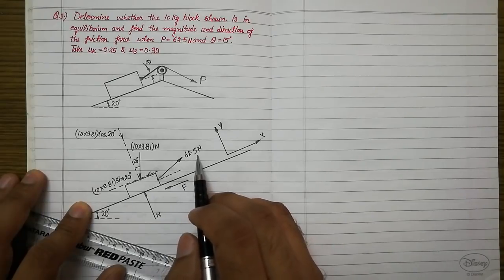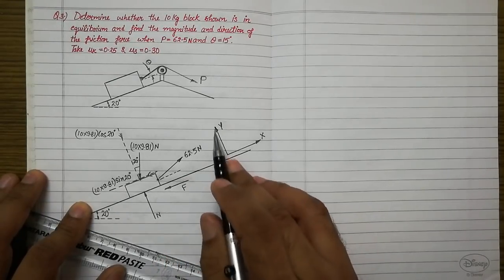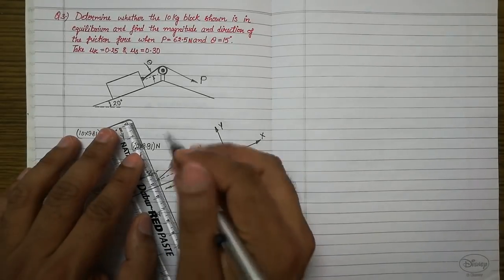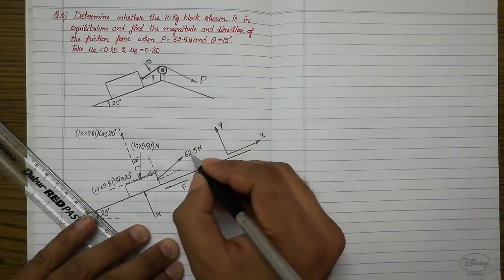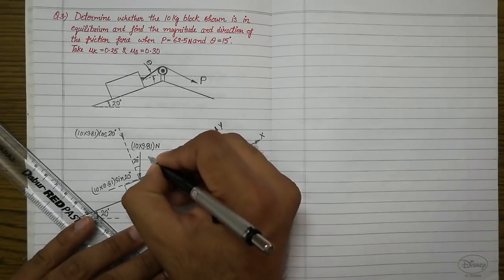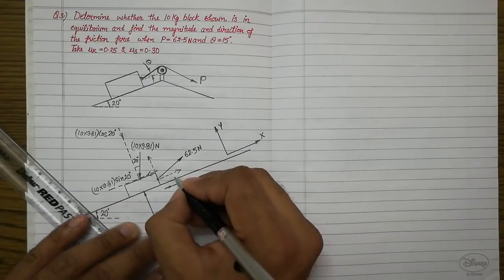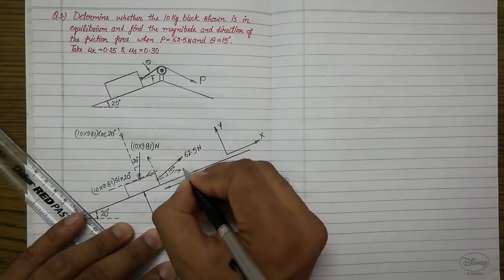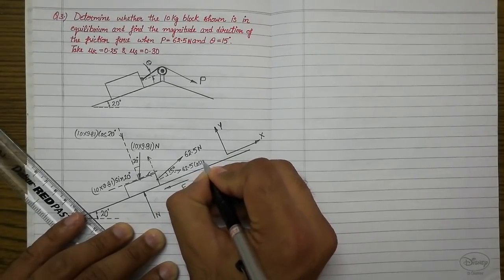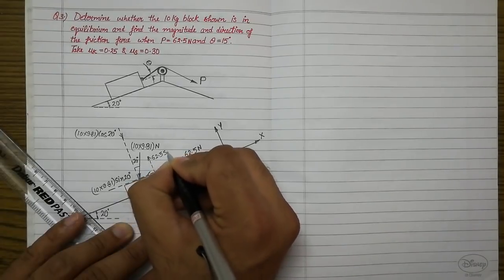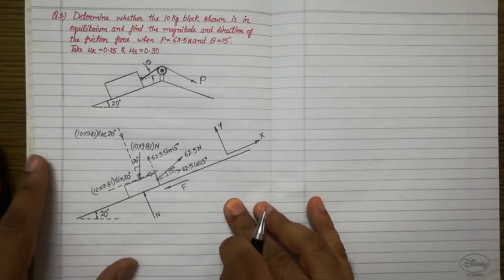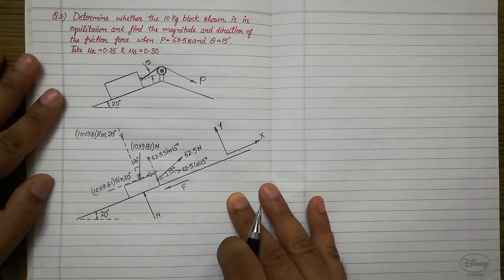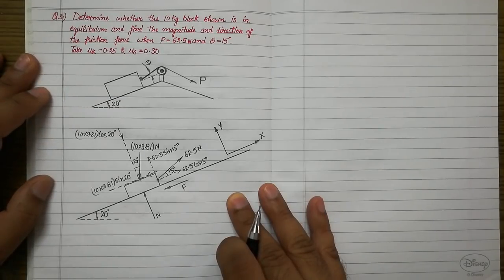Now for the last force, 62.5 Newtons, which also acts at an angle to both axes. From its point of application we draw two lines — one along x-axis and one along y-axis. Since the arrowhead moves away from the point of application, both components also point away. The angle is given as 15 degrees, so the x-component is 62.5 cos 15 degrees and the y-component is 62.5 sin 15 degrees. The free body diagram is now complete. Always draw free body diagrams clearly and accurately when solving friction problems.